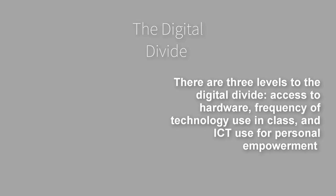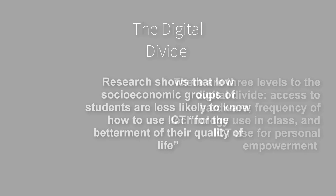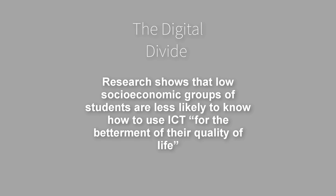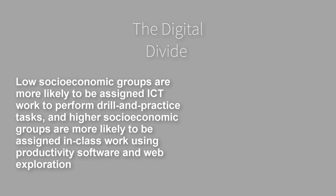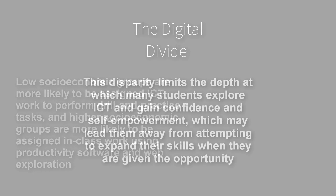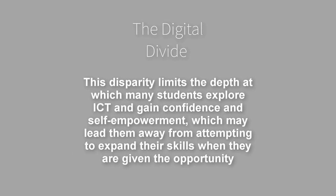There are three levels to the digital divide: access to hardware, frequency of technology use in class, and ICT use for personal empowerment. Research shows that low socioeconomic groups of students are less likely to know how to use ICT for the betterment of their quality of life. Low socioeconomic groups are more likely to be assigned ICT work to perform drill and practice tasks, and higher socioeconomic groups are more likely to be assigned in-class work using productivity software and web exploration. This disparity limits the depth at which many students explore ICT and gain confidence in self-empowerment, which may lead them away from attempting to expand their skills when given the opportunity.